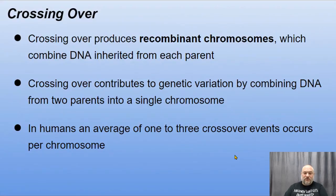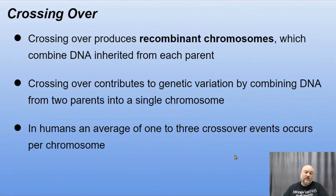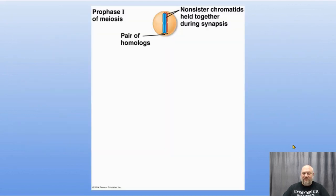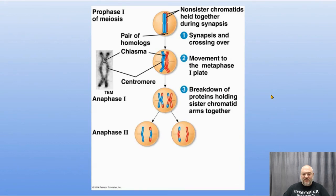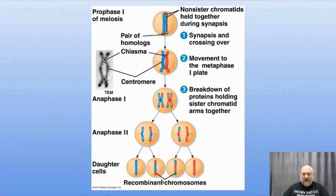Then we add crossing over, which produces recombinant chromosomes combining DNA inherited from each parent. Crossing over contributes to genetic variation by combining DNA from two parents into a single chromosome. On average, humans have between one and three crossover events per chromosome pair — with 23 pairs, that's a lot of crossing over. Looking at one chromosome pair, after a crossing over event we can see one that looks like dad's, one that looks like mom's, and brand new recombinant combinations that never existed before.